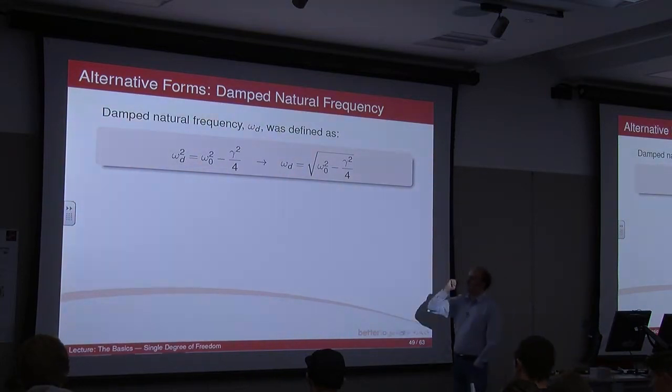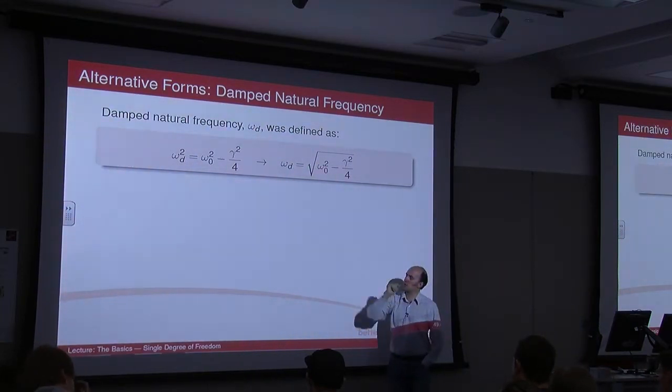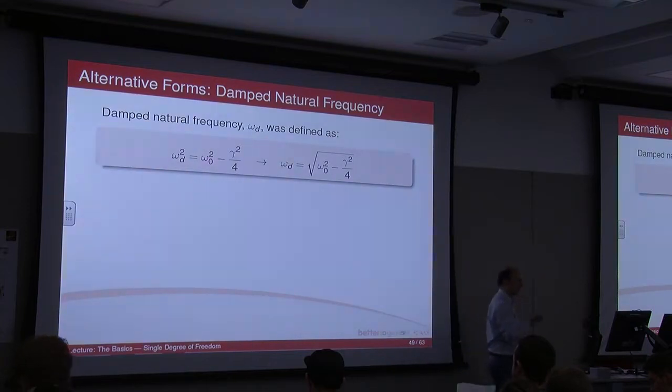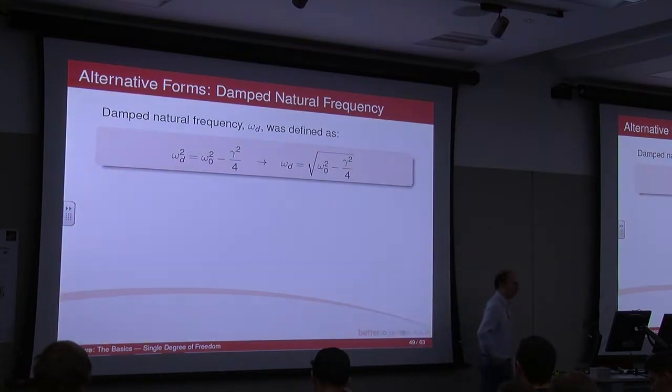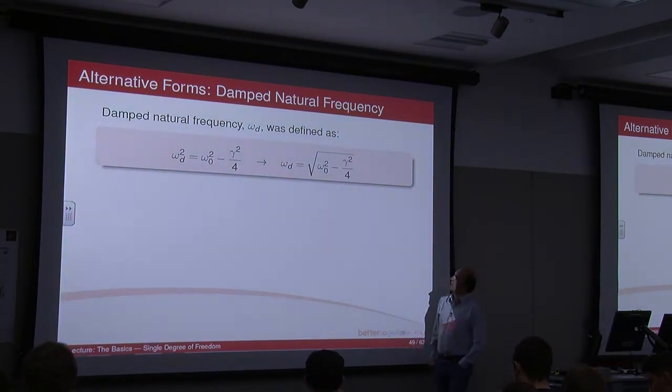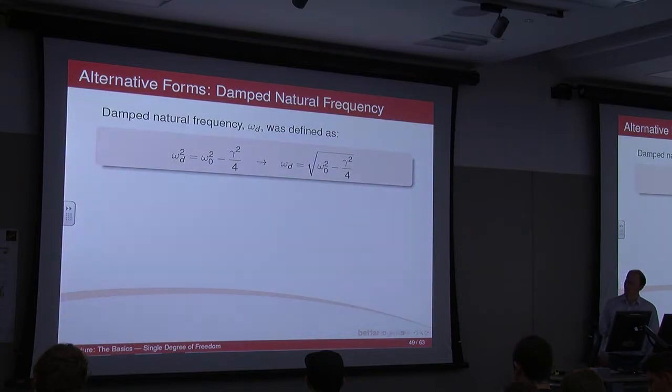This is the equation we use quite a lot in the tutorial, equation 2.25. And like I said, when you've got critical damping, omega naught squared and gamma squared upon 4 are equal to each other, but in this case we're not doing that. Omega d is defined as omega naught squared minus gamma squared upon 4 all square rooted, which obviously makes sense.